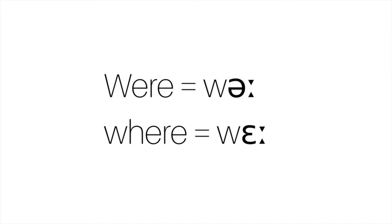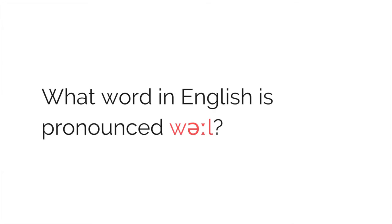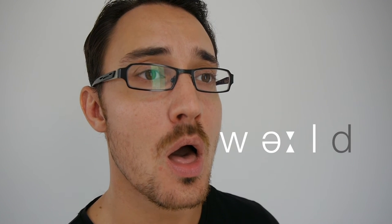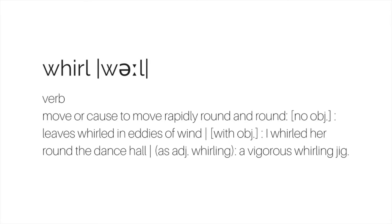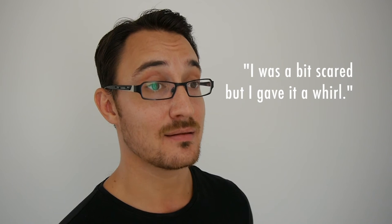Note that this word is not pronounced the same way as 'where'. We're saying 'were', not 'where'. This time, let's keep the W sound at the beginning but also add back the L sound at the end. What word do we get now? W-er-l. The word 'whirl' means to spin around, and it's used in quite a few common expressions in English, such as 'give something a whirl', which means to try something. For example: 'I was a bit scared, but I gave it a whirl.'